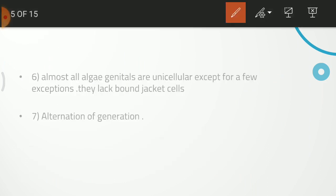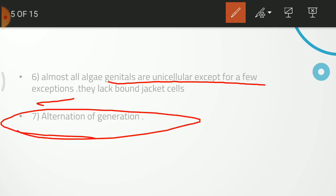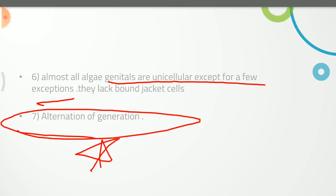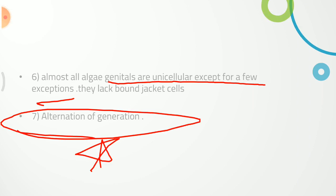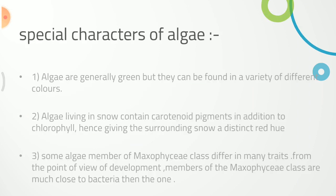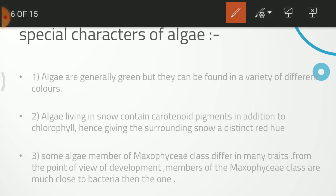Almost all algae reproductive structures are unicellular, except in some fused forms. Some of the reproductive structures are unicellular. Then there is alternation of generation — this is an important topic. Alternation of generation is followed by special characters.